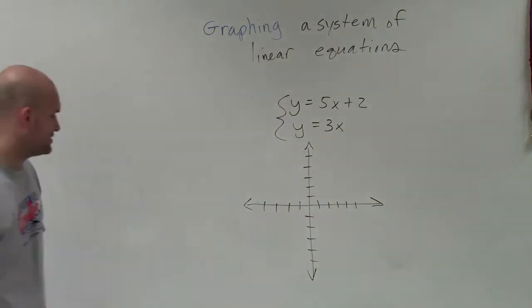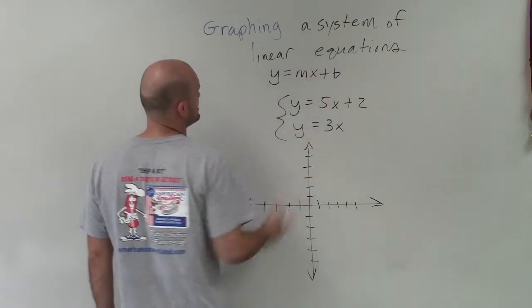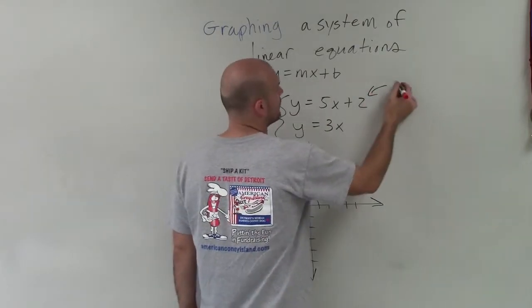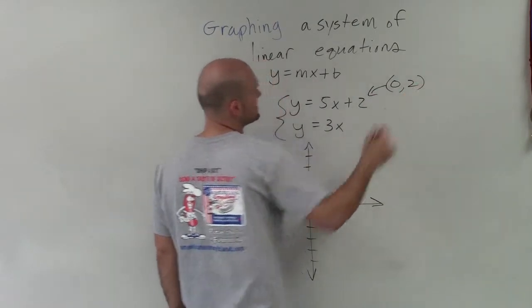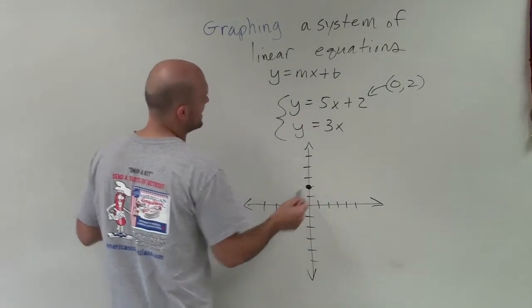So now what we need to do is remember that when we have it in y equals mx plus b form, b represents our y-intercept. So here our y-intercept is the coordinate point 0 comma 2. I'm going to go up 2 and make a nice big dot.